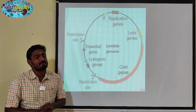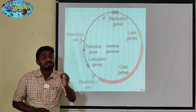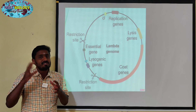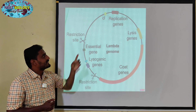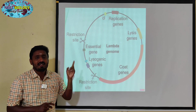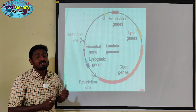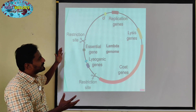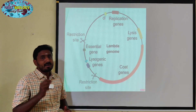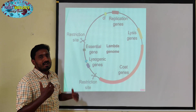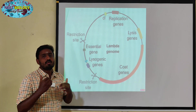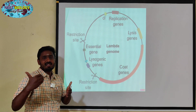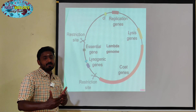Bacteriophage is used for DNA cloning. We have discussed expression vectors and cloning vectors. The lytic cycle relates to expression vectors, and the lysogenic cycle relates to cloning vectors. Using the Lambda genome with E. coli bacteria, we produce copies of DNA and can produce insulin.